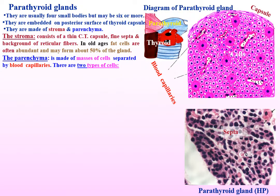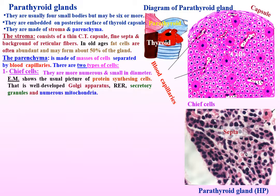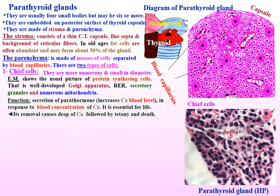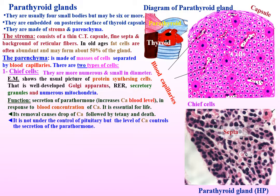There are two types of cells. Chief cells are more numerous and small in diameter. By electron microscopy, they show the usual picture of protein-secreting cells — well-developed Golgi apparatus, rough endoplasmic reticulum, secretory granules, and numerous mitochondria. They secrete parathormone, which increases blood calcium level in response to blood calcium concentration. It is essential for life, as its absence or removal of the parathyroid gland causes a drop in calcium followed by tetany and death. It is not under the control of the pituitary, but the level of calcium controls the secretion of parathormone.